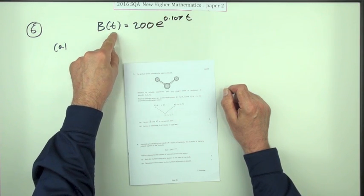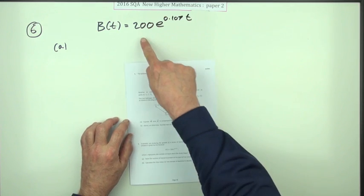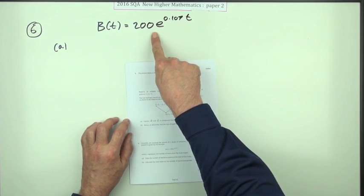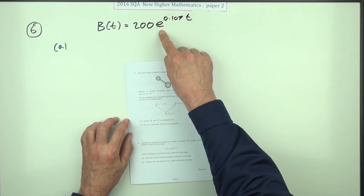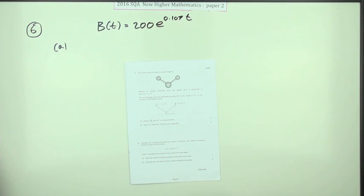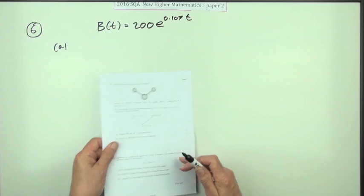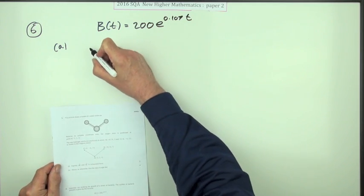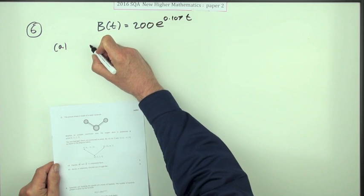Obviously that 200 must be what they start at, because when T is zero it's e to the zero which is just one. And it does say just state, so I don't think you actually need to write down 200 e to the power zero. You can just see the number of bacteria present at the start.